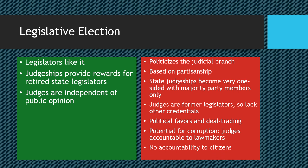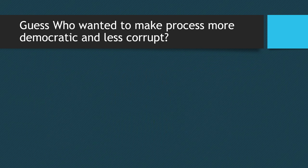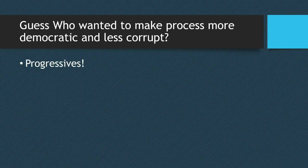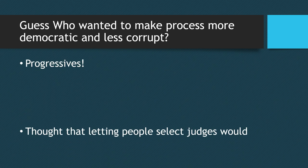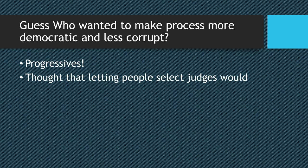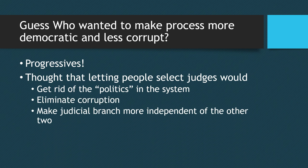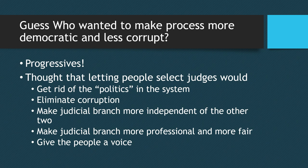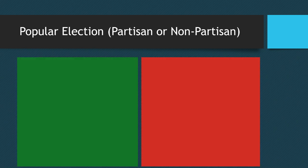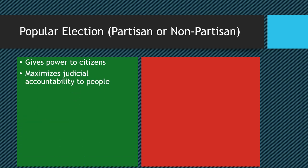Both gubernatorial and legislative selection have problems with political corruption. The progressives hated both systems. They believed that letting the people select judges would eliminate politics and corruption, make the judicial branch more independent of the governor or legislature, and make it more professional and fair. So they promoted popular elections, and many states followed — Ohio changed to popular election in 1912. The pros are that it gives power to citizens and makes the judicial branch accountable to the people being judged.